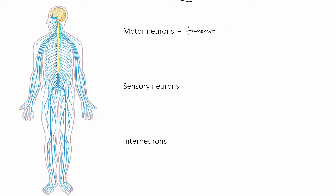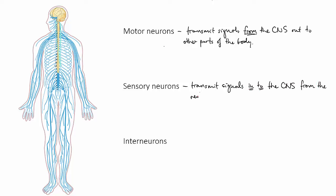Motor neurons transmit signals out from the CNS to parts of the body, like muscles. Sensory neurons transmit signals in from the tissues or organs into the CNS. And interneurons connect other neurons within the CNS.